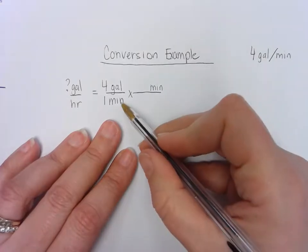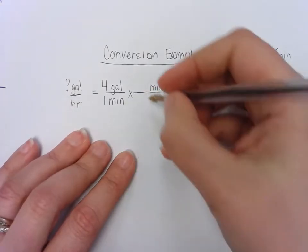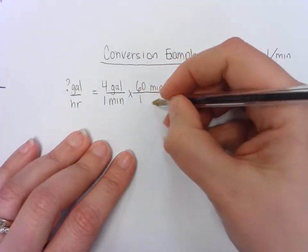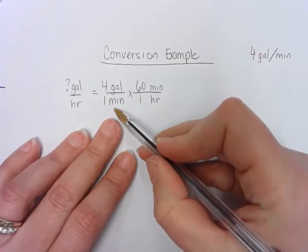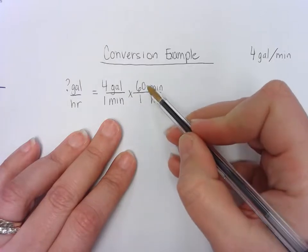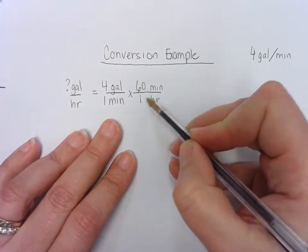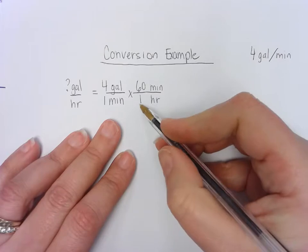We can easily go minutes to hours. We know that there are 60 minutes in one hour. And I knew to put the 60 on the top because that's where my minutes were in order for me to cancel. And then if I were going minutes to hours, I knew that hours have to go in the other empty space. So it's one hour.